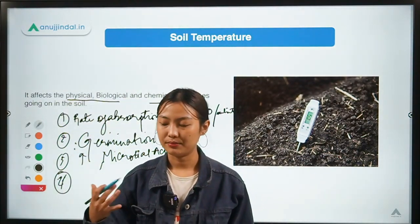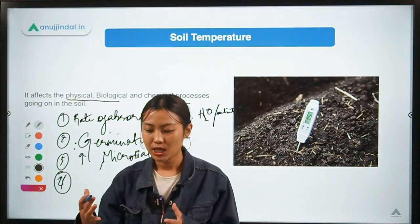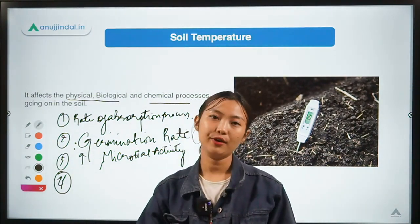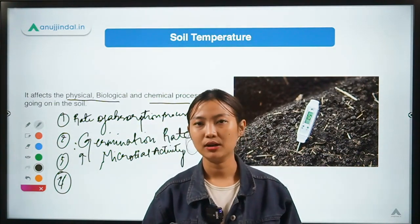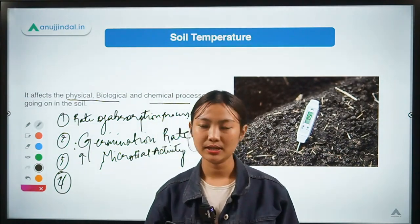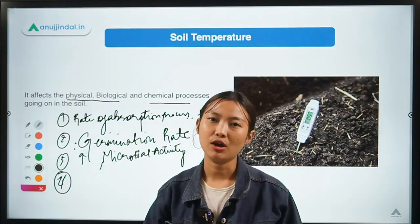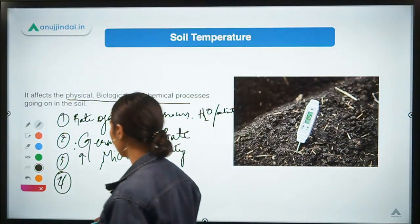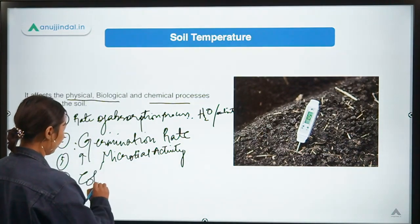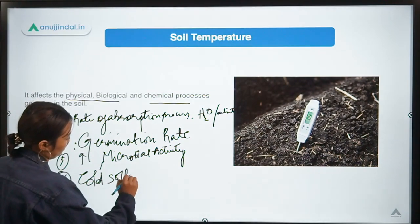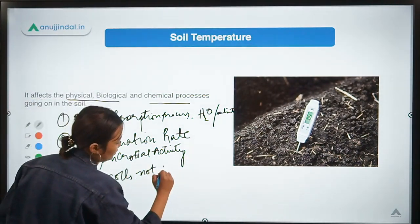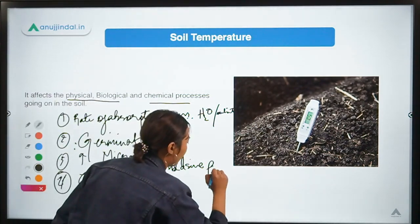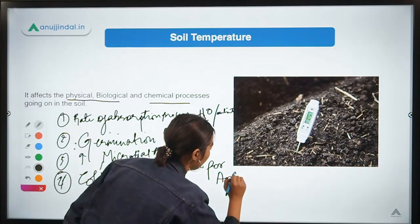Cold soils are not conducive for the normal growth of most agricultural crops. If the soil is warm, there will be better crop growth and the growth rate will also increase. For most agricultural crops, cold soil is not going to support a better crop growth rate. Remember: it is always the warm soil which is beneficial for agriculture crops.